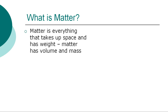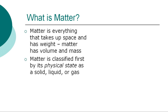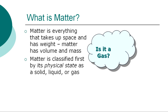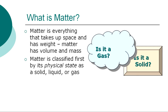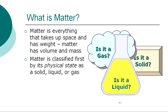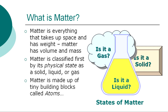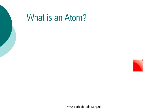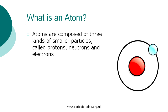Matter is everything that takes up space and has weight. Matter has volume and mass. Matter is classified first by its physical state as solid, liquid, or gas, which are called states of matter. Matter is made up of tiny building blocks called atoms. Atoms are composed of three kinds of smaller particles called protons, neutrons, and electrons.